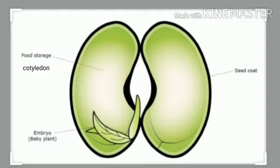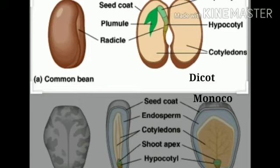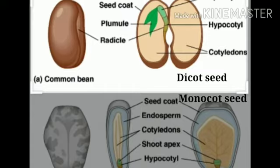There is a cotyledon which stores food for the growing embryo. On the basis of the number of cotyledons present in a seed, the seeds are of two types. Dicot seeds means there are two cotyledons. Monocot seeds means there is one cotyledon.